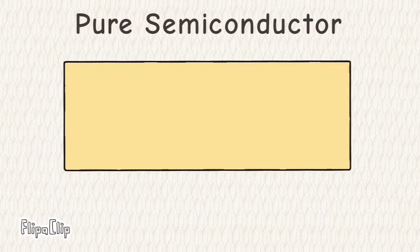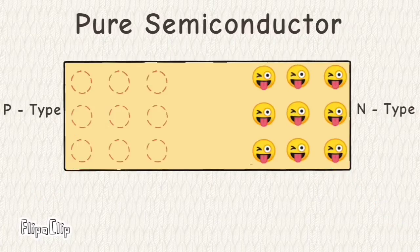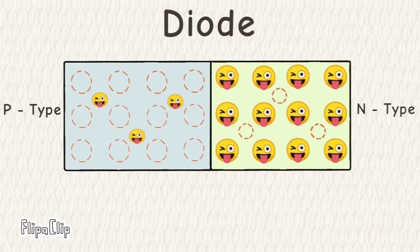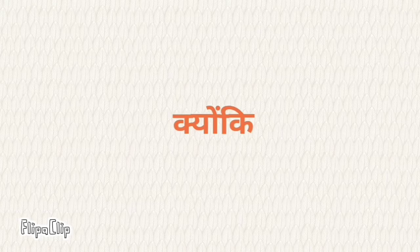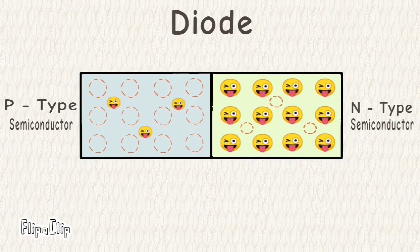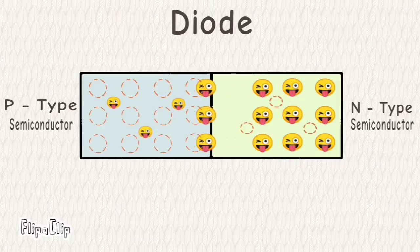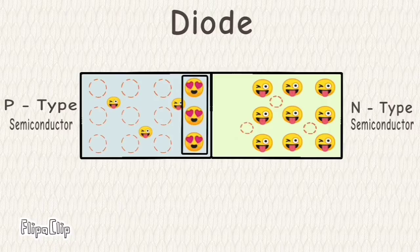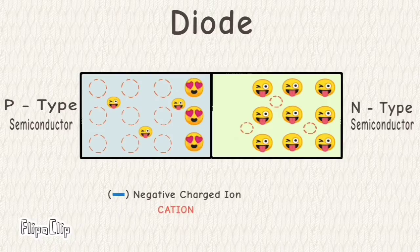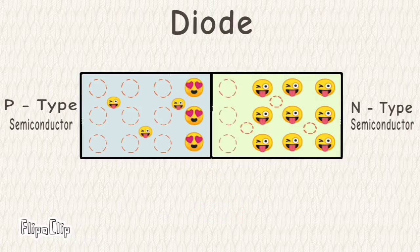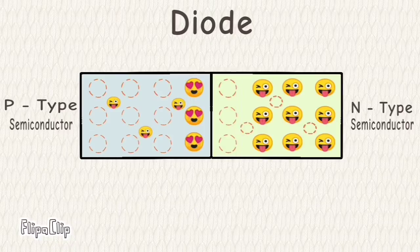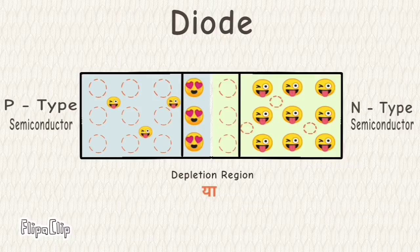Toh jab kisi p-type semiconductor ko n-type semiconductor se joda jata hai, tab jo cheez banti hai usko diode kaha jata hai, jisko p-n junction bhi bola jata hai. Is junction mein free electrons jump karte hain, jo hole create karta hai — woh bhi positive charge ion, jisko p-ion bola jata hai.